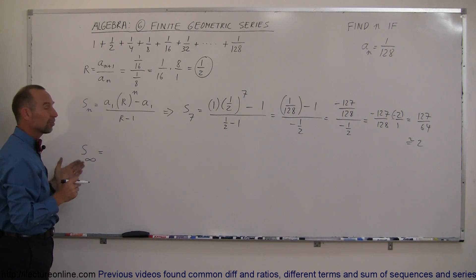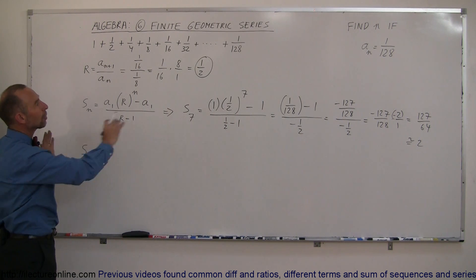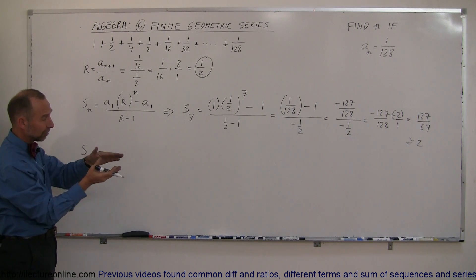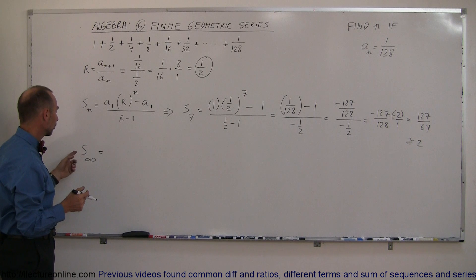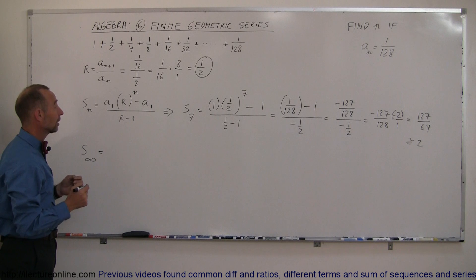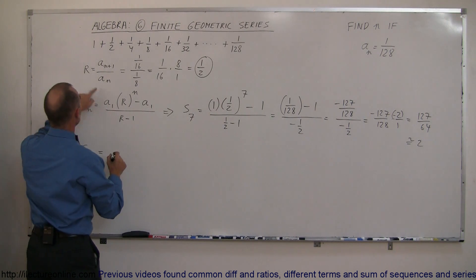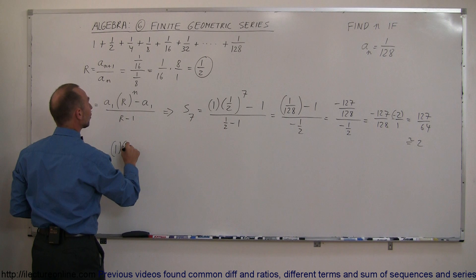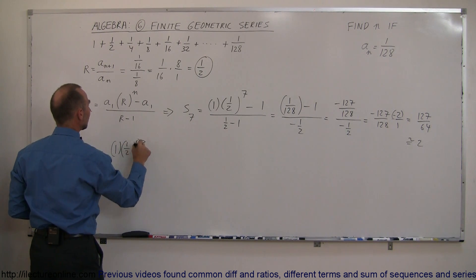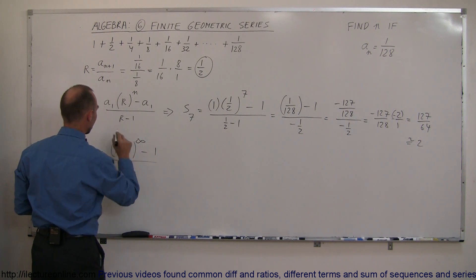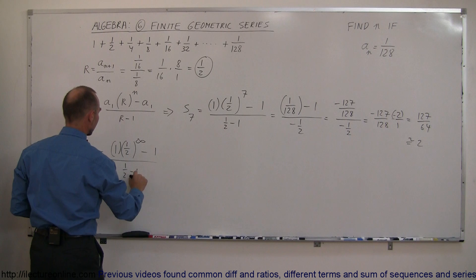Now what if we want to find the sum of all the terms out to infinity? The numbers get smaller and smaller as we go out, so what will the total sum be? To find it, we take the first term (1) times the common ratio (1/2) raised to the infinity power, minus the first term, all divided by the ratio 1/2 minus 1.